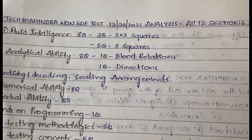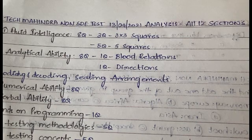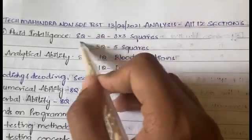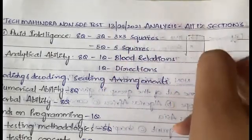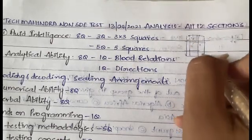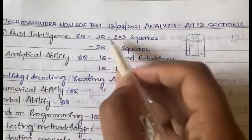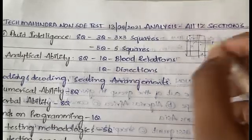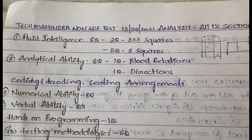The first section is Fluid Intelligence, which is essentially non-verbal — all pictures and diagrams. You'll have eight questions in total. Three questions are in the 3x3 squares format where you'll have nine boxes with eight figures given and you need to find the ninth figure based on the pattern. Five questions are in the five squares format where one of the five squares is missing.